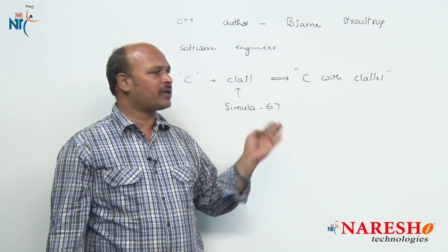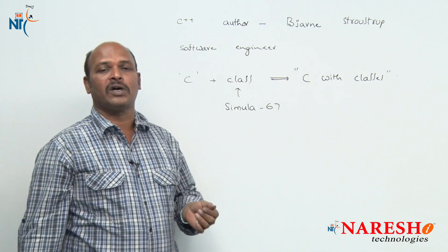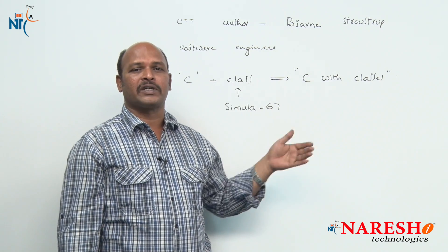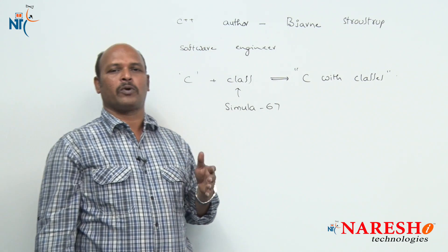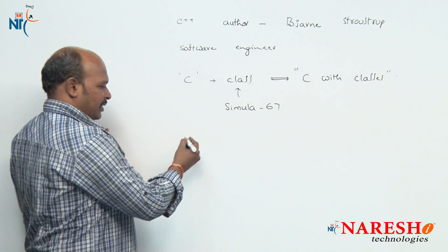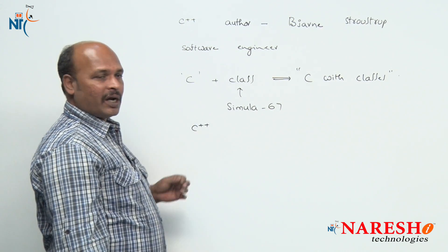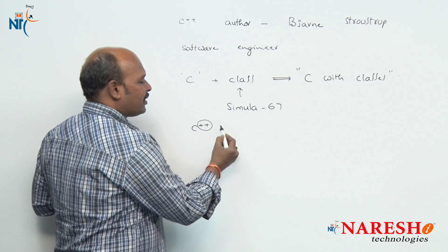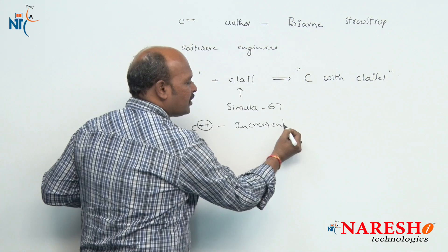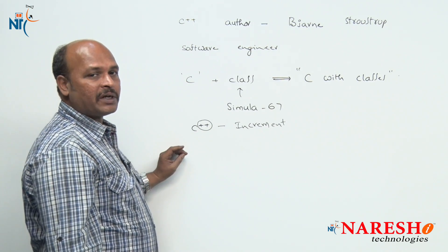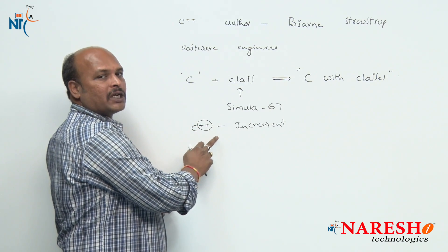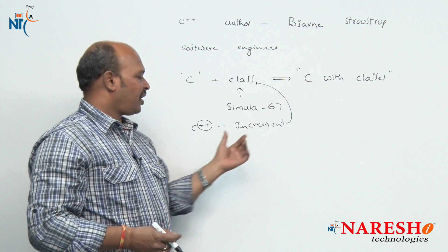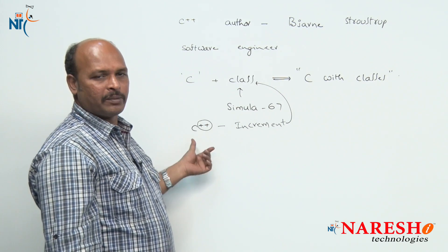Everybody was calling it with different names — superset of C, extension of C, increment of C, advanced version of C, and so on. To avoid this naming confusion, ANSI recognized it with a new name called C++ in 1983. Interestingly, in C language, '++' indicates the increment operator, meaning an increment of one. So indirectly C++ means C with one increment, and that one increment is the class. Today it is also very familiar as CPP.